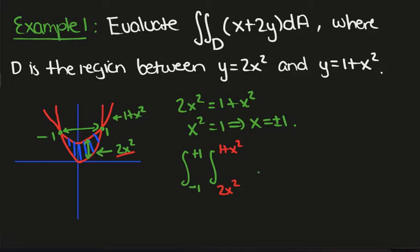Then we have our usual integrand of x plus 2y, and then this first integral is evaluated with respect to y because the bounds are given in terms of x, the final integral has to be a dx integral.